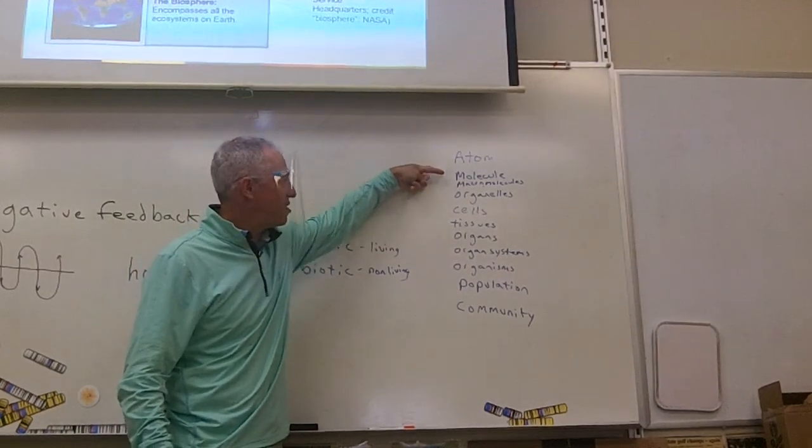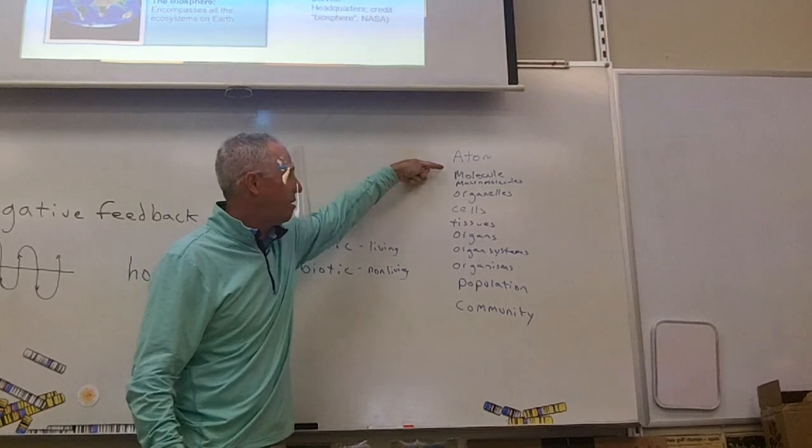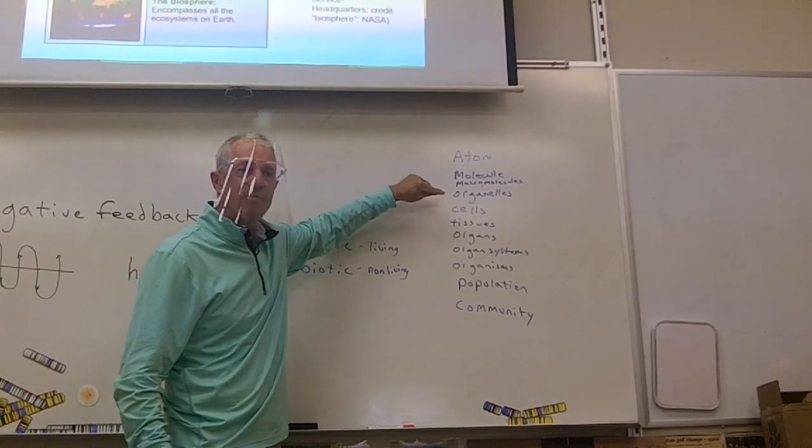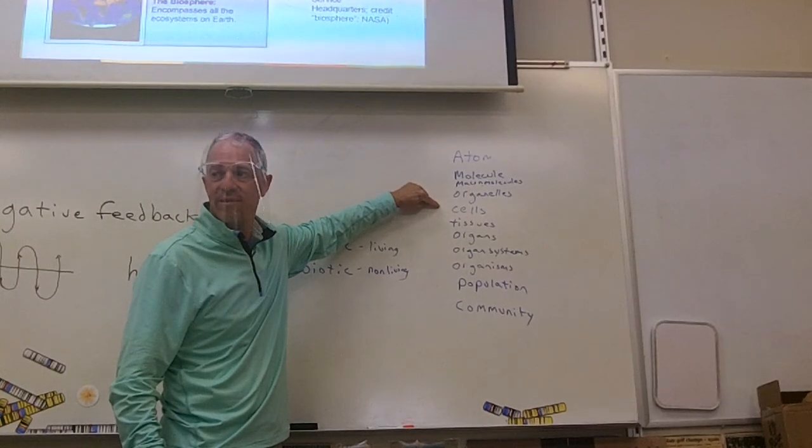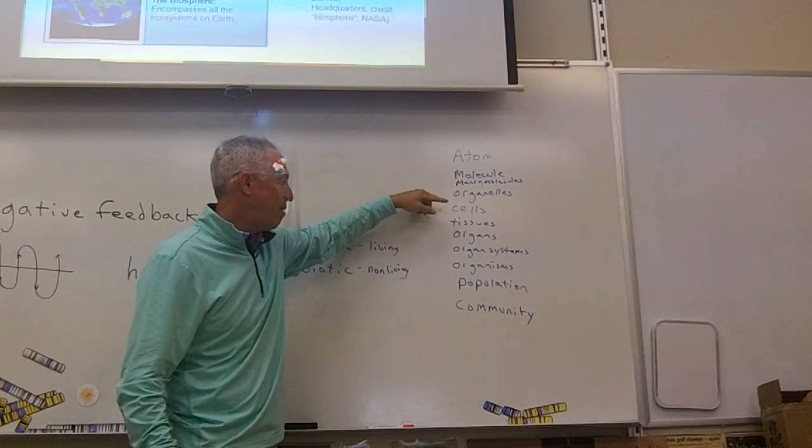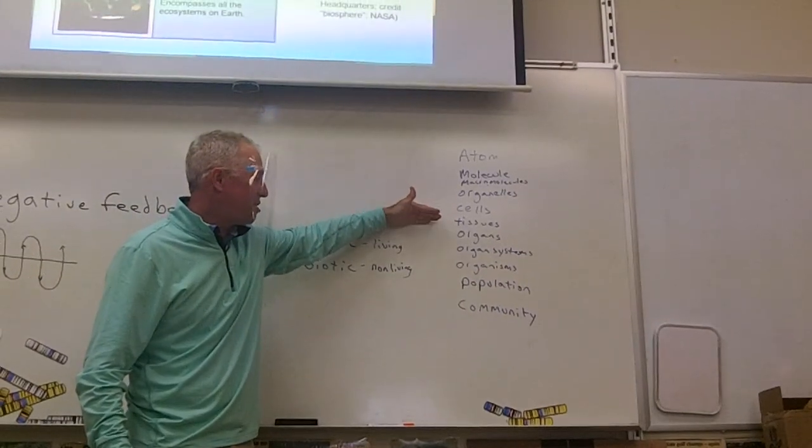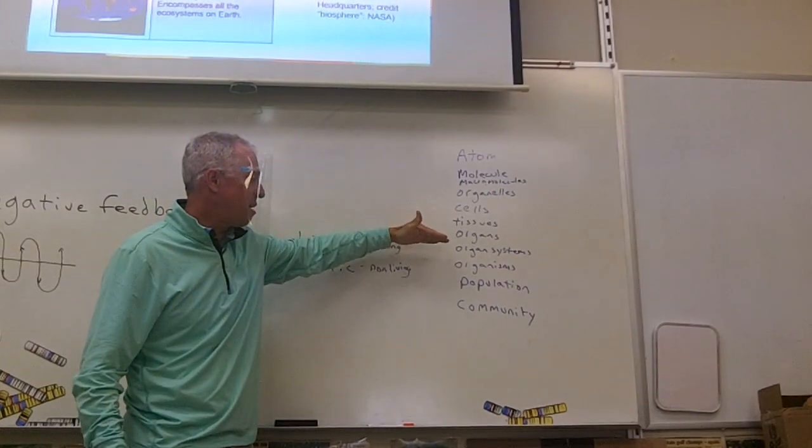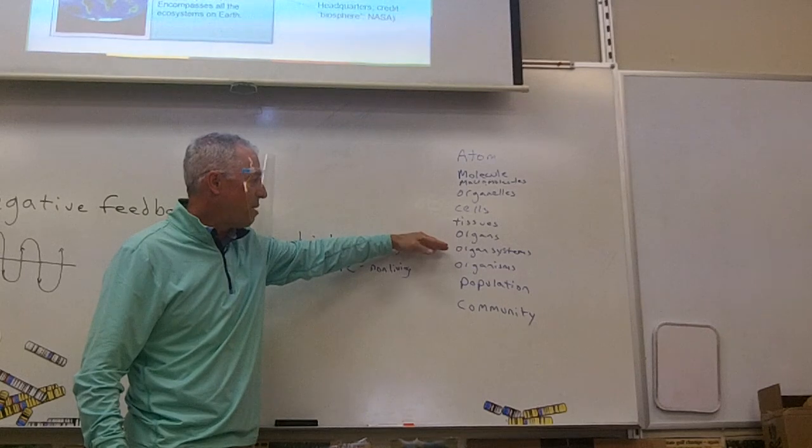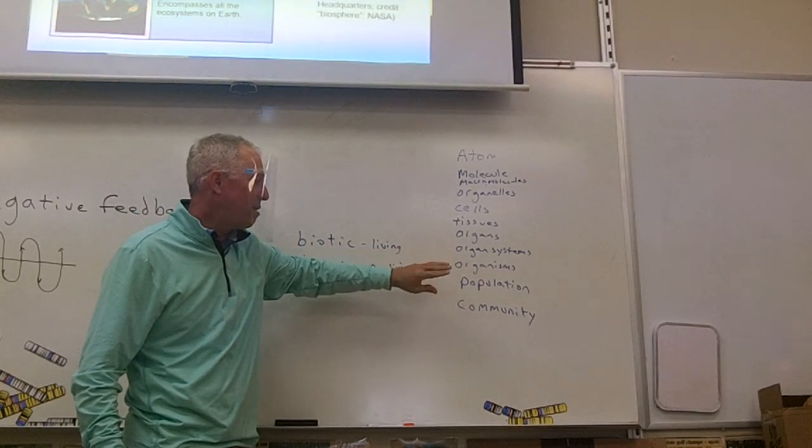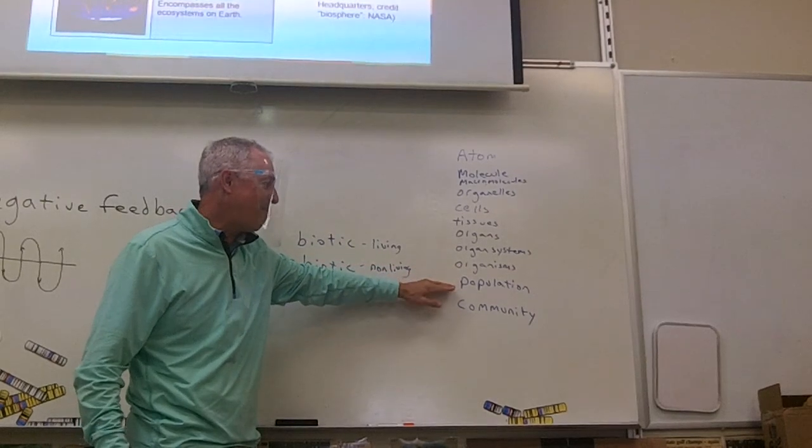In other words, none of these things are considered living on their own, but that is. That can survive and reproduce, pass on genes over time. That's what life is all about. Cells together make tissues, tissues make organs, organs make organ systems, and then you have organisms. Enough organisms together, you have a population.